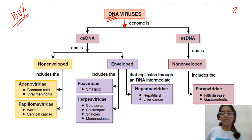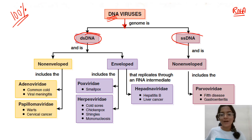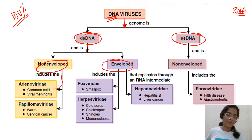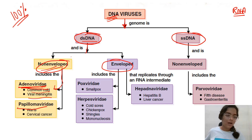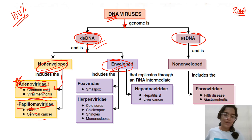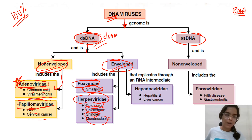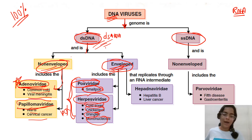Now, classification based on DNA virus and RNA virus. DNA viruses can be double-stranded or single-stranded, and can be enveloped or non-enveloped. Double-stranded non-enveloped examples: Adenoviridae — causes common cold and viral meningitis — and Papillomaviridae — causes warts and cervical cancers. Double-stranded enveloped examples: Poxviridae — causes smallpox — and Herpesviridae — causes cold sores, chickenpox, shingles, and mononucleosis.